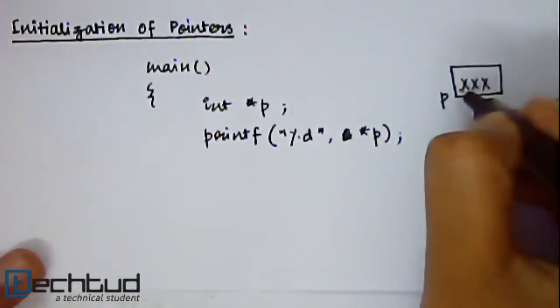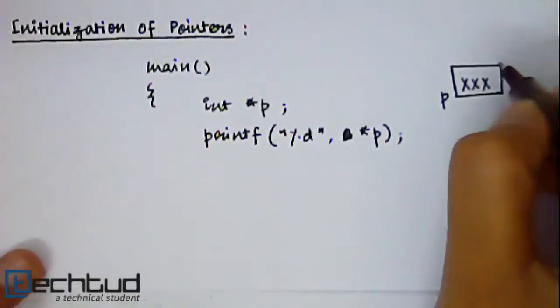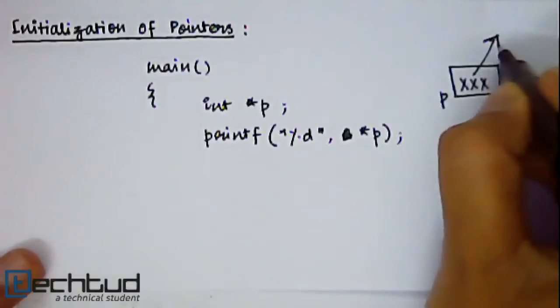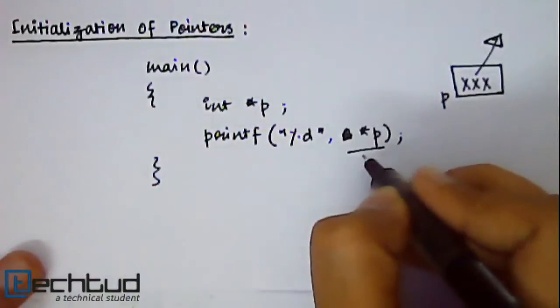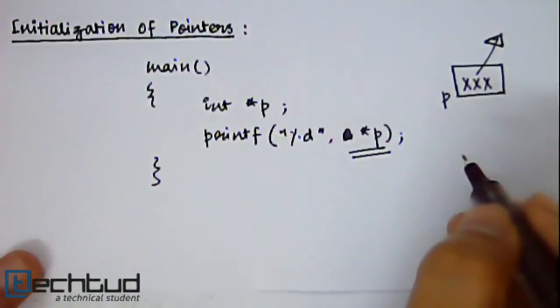So it will lead us to some garbage location where the memory may even not exist. So your program may crash if you use something like this. So always remember to initialize your pointer.